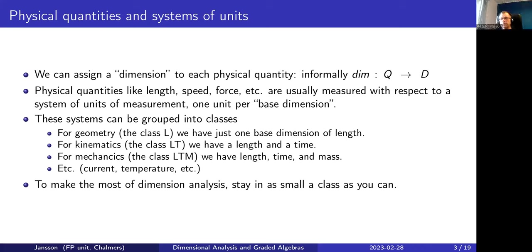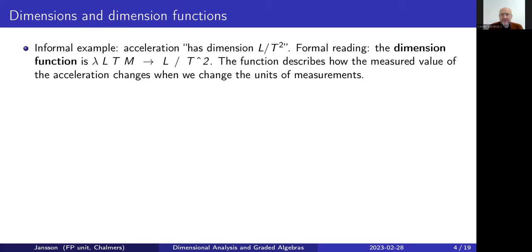Informally one talks about, say, acceleration being length over time squared. But if you look at the formal books on this, they talk about the dimension function. Functional programming is a good setting here — a lambda from (L, T, M) to L/T² in a three-unit system would be the function. What is this function doing? It's essentially a monomial describing how the measured value of acceleration should change if we change the units of measurement.